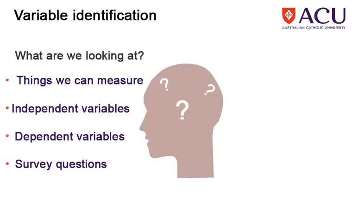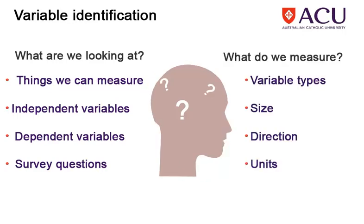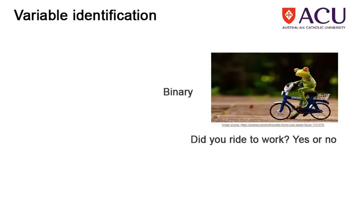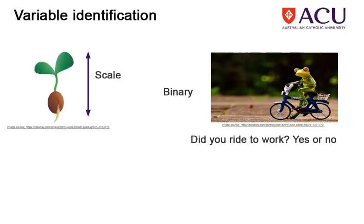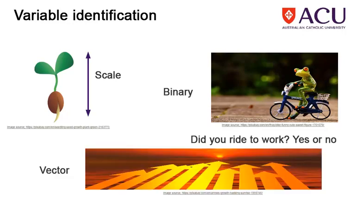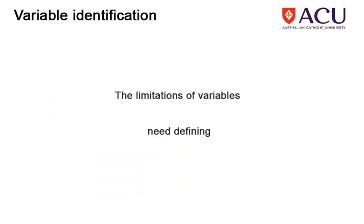This includes determining what the variables are representing and what type of numerical information they capture. Numerical information can range from simple binaries, such as whether a person rode their bike to work, yes or no, to scaled measurements, such as the heights of seedlings, through to complex vectors, such as wind velocities over a landscape.